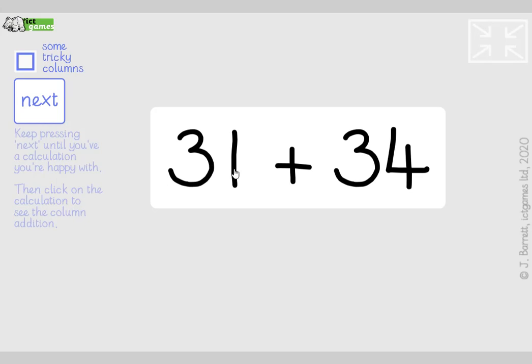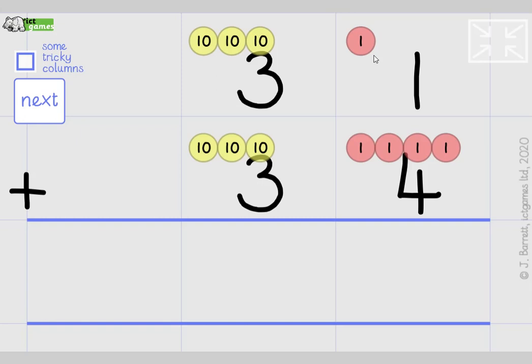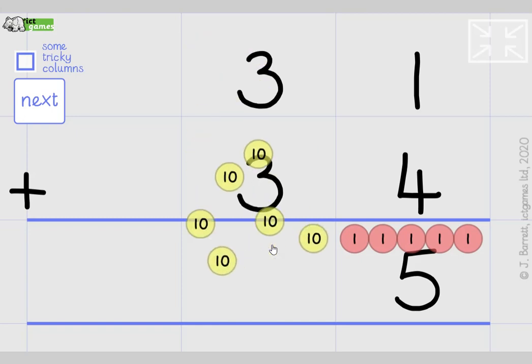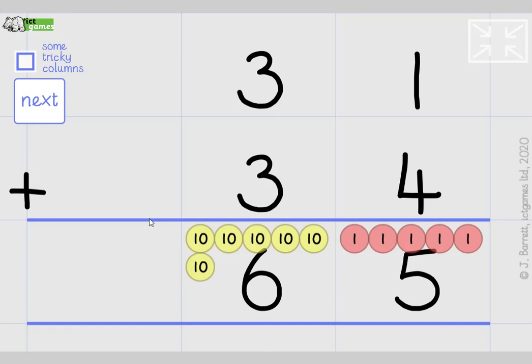Okay, one more. 31 add 34. Okay guys, pause the video. Write 31 add 34. Write it like it is here first, and then write it as a column addition, as a vertical addition. Okay, here we go. 31 add 34. Right guys, again, now that you've checked that you've written it like me, can you work it out? Pause the video and work it out. Okay, back with me now. So 1 add 4, 1 add 4 is 5. Feels like 3 add 3, but remember the value of it is 30 add 30. 30 add 30 is 60. So 31 add 34 equals 65. Good job, guys, fantastic.